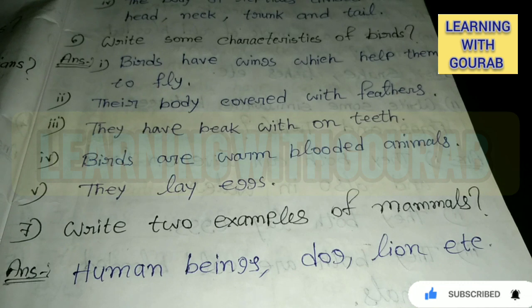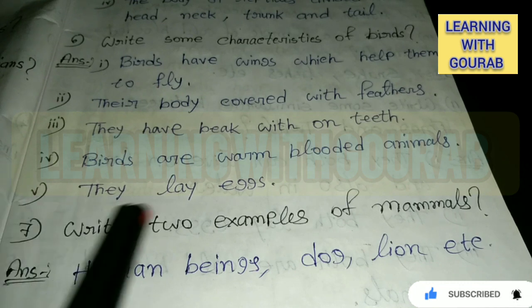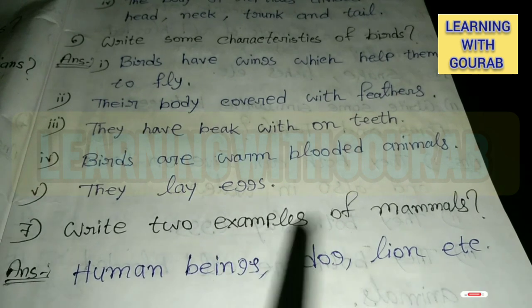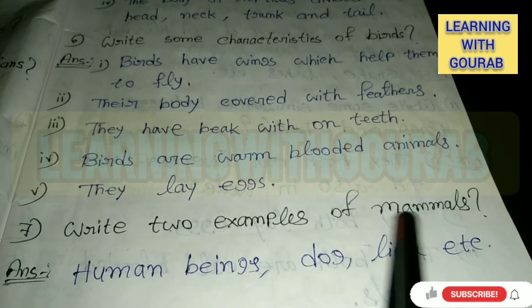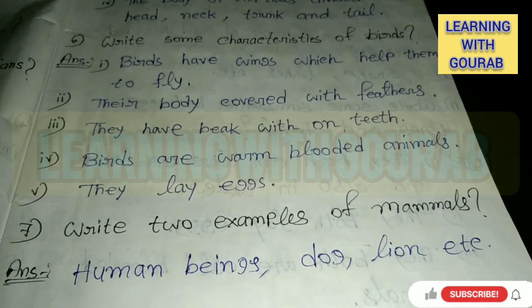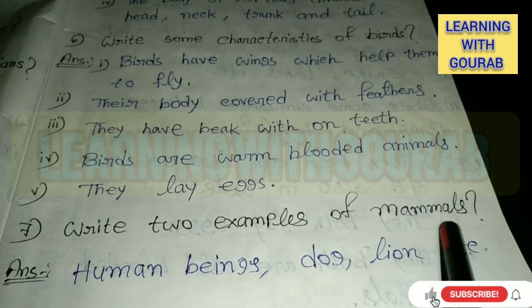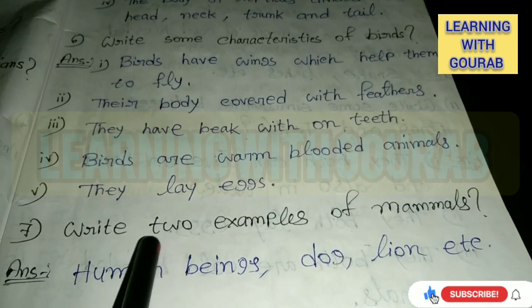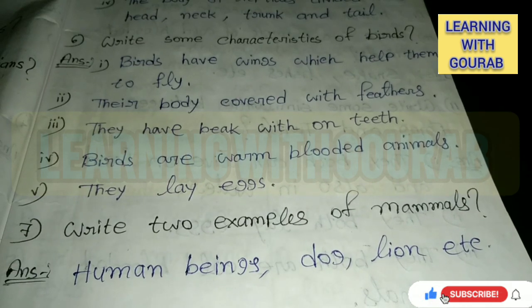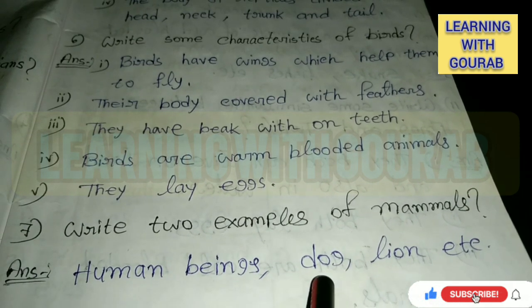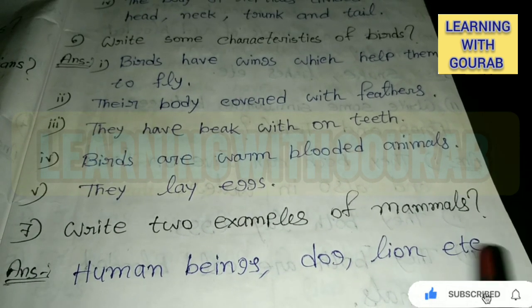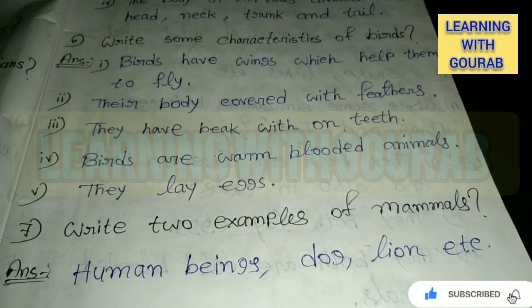Next question: Write two examples of mammals. Answer: Human beings, dog, lion, etc.